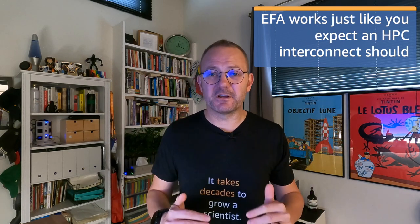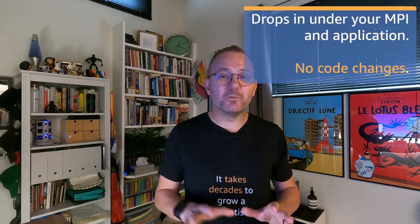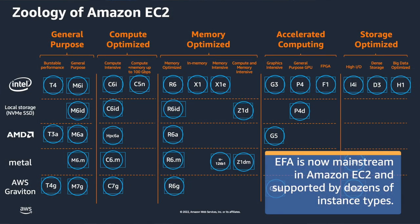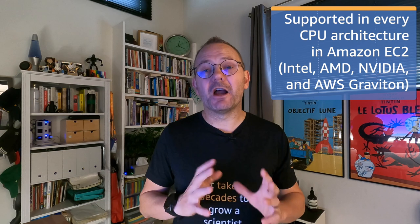If you've made it this far, here's what I hope you take away. First, EFA has got your back — it's designed and built to give you the same experience as you'd expect on a traditional on-premises cluster using any number of interconnects. Second, because it's built on LibFabrics and is tightly integrated with Intel MPI, OpenMPI, MVAPICH, and NVIDIA's collectives library NCCL, you don't need to change any of your code to work with it. Third, it's available in dozens of EC2 instance types, which means you can shop around EC2's catalog for the right CPU, GPU, storage, or memory model that you need for your jobs. EFA is available on Intel, AMD, or NVIDIA-based instances in EC2, as well as our own Gravitons, which are our ARM-based processors.